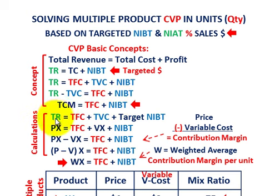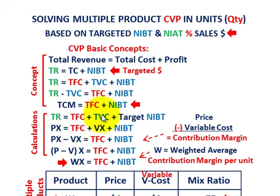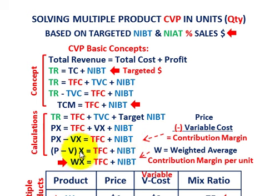Starting with total revenue equal to total fixed cost plus total variable cost plus targeted net income. We can further break that down: total revenue equals unit price times quantity for each product. Total variable cost is variable cost per unit times quantity. Moving variable cost to the left side gives us price times quantity less variable cost times quantity equals fixed cost plus net income before taxes. Factoring out quantity: (unit price minus variable cost) times quantity equals total fixed cost plus net income before taxes.